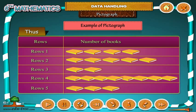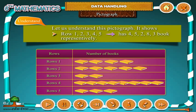Example of a pictograph. Let us understand this pictograph. It shows Row 1, 2, 3, 4, 5.